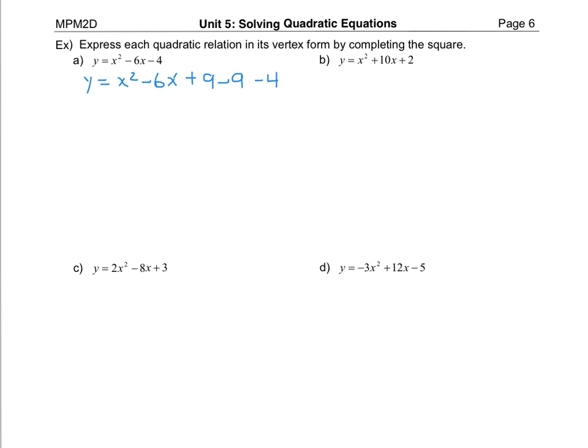Now we group those first three terms together because these ones complete the perfect square and will factor to be that perfect square. When I factor that part, I take the square root of the first, put it at the beginning of the bracket, square root the last, put it at the end, take the sign from the middle, and that goes to the exponent of two. Then we collect the like terms left over: minus nine minus four combine to become minus thirteen. So this one has a vertex at positive three, comma negative thirteen.